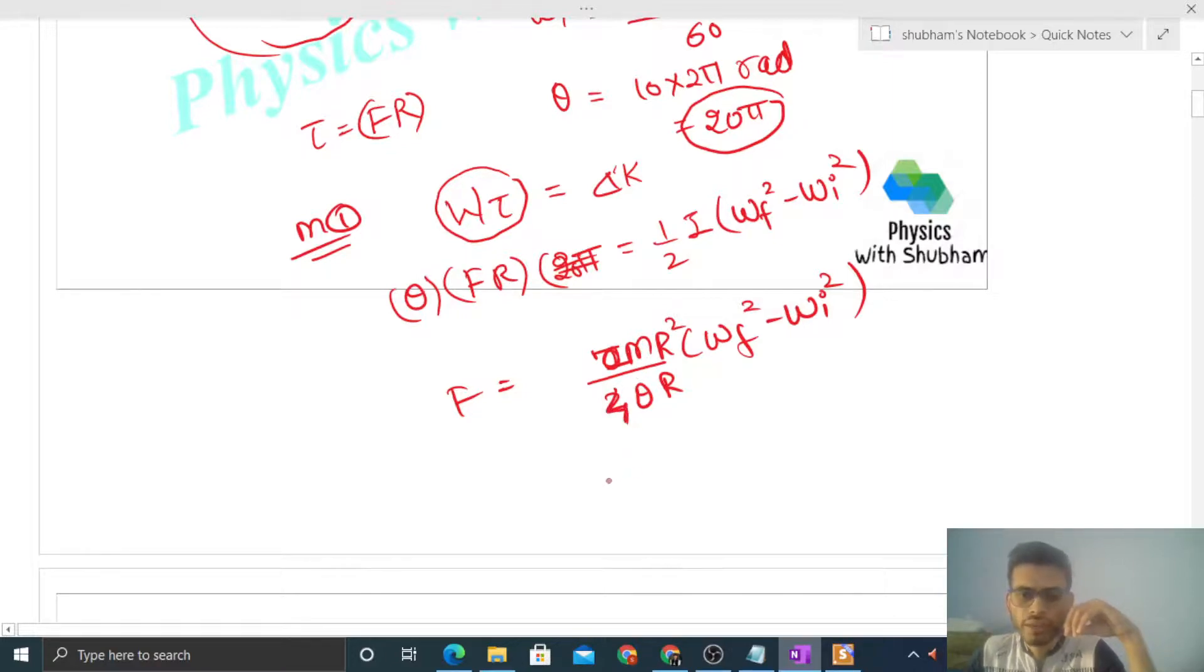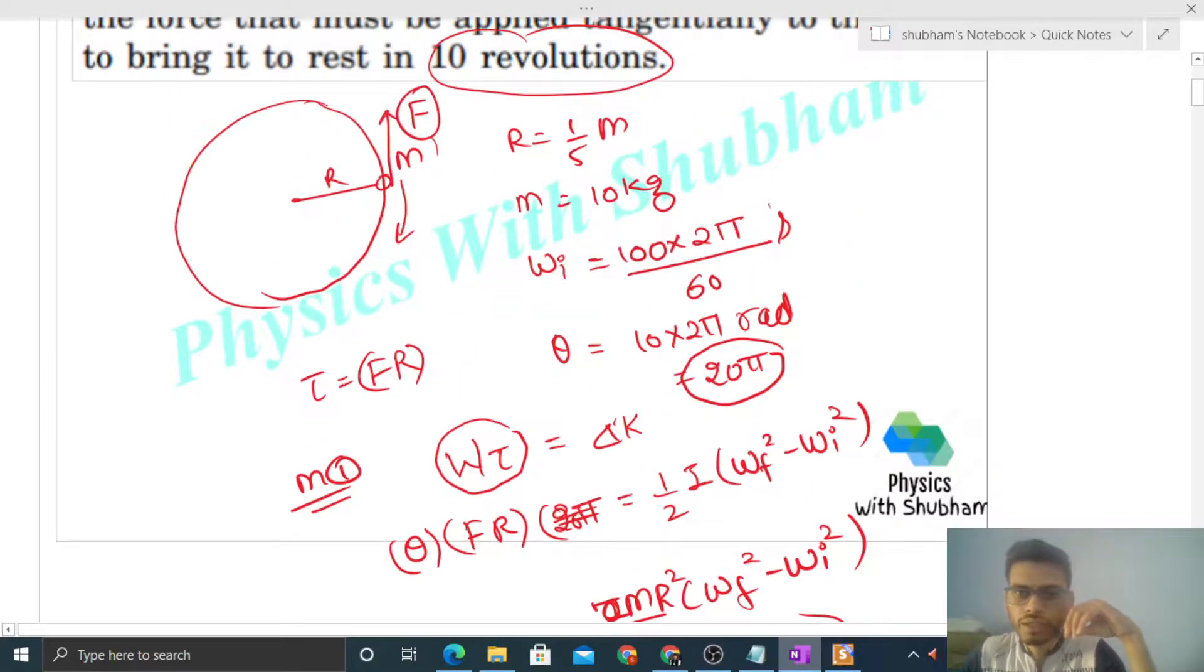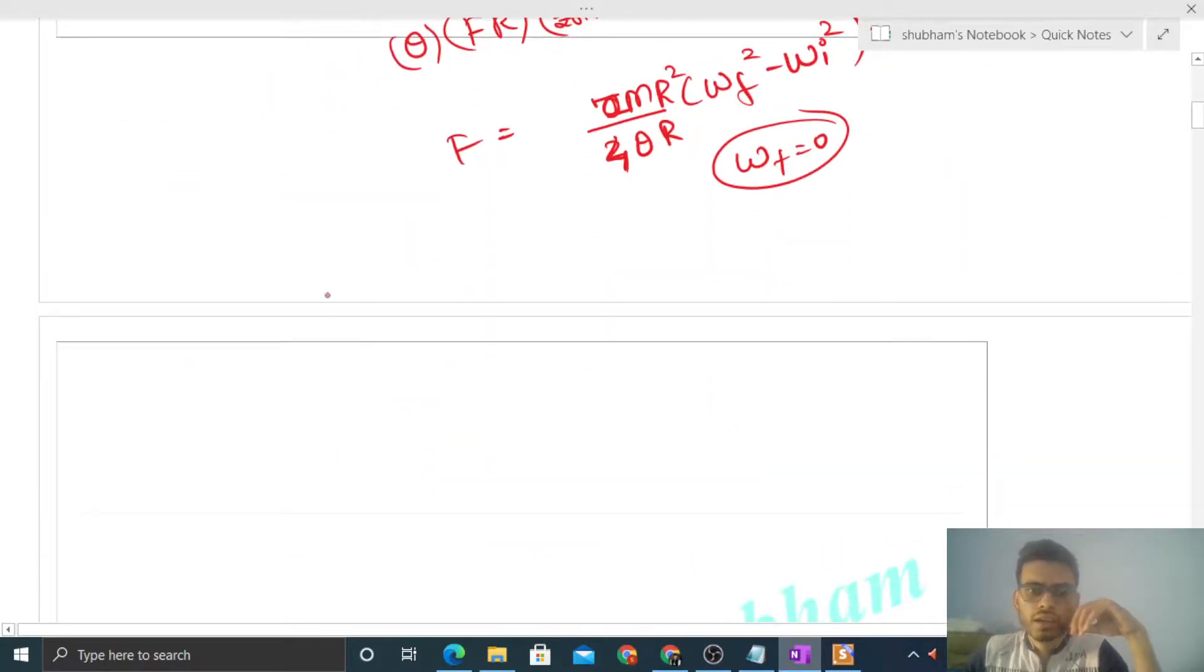Now everything is given: m's value is given, R's value is given, theta's value is given. Omega final will be zero, finally it will come to rest, and omega initial is also given. Just put the values and you will get the answer. Method 2 is simple kinematics.